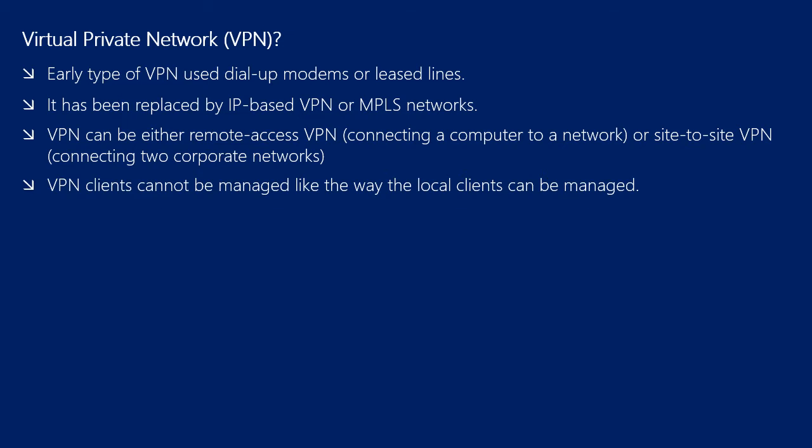VPN can be of two types: Remote Access VPN and Site-to-Site VPN. In Remote Access VPN, a user coming from the internet can connect to your corporate network. Whereas in Site-to-Site VPN, if you have two corporate networks, you can connect them with each other using Site-to-Site VPN. VPN does have some limitations. The biggest is that VPNs limit the ability of the connected client to be managed the way you manage local computers in your corporate network.